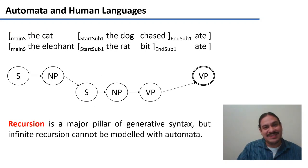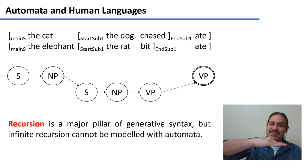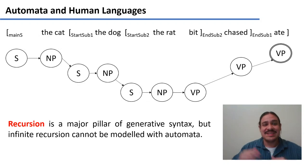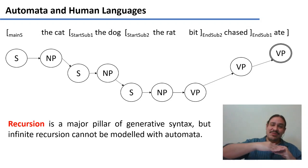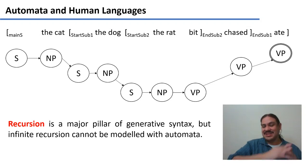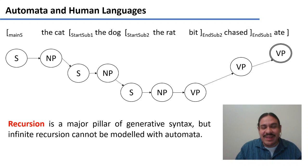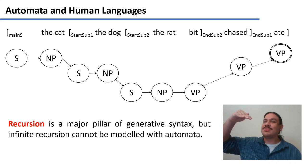As soon as we add one level of center embedding — 'the cat the dog chased ate' — you get a more complicated finite state machine. If you add a second embedding — 'the cat the dog the rat bit chased ate' — it gets even worse. The first problem with this is that there's no stopping point; in theory it could go on forever, you could have as many embeddings as you want, and then it would be impossible to build one of these finite state machines because it would embed into itself infinitely.